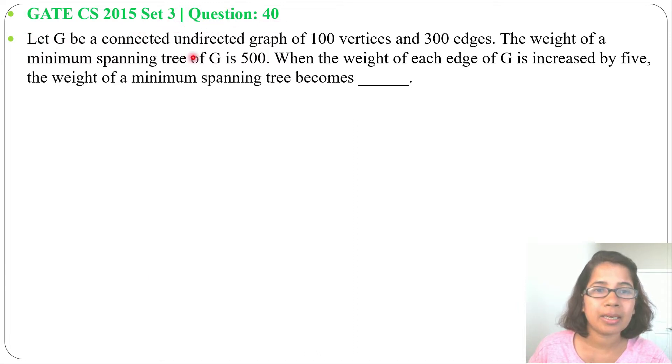Let G be a connected undirected graph of 100 vertices and 300 edges. The weight of a minimum spanning tree of G is 500. When the weight of each edge of G is increased by 5, the weight of the minimum spanning tree becomes blank. So in this question, it's given there are 100 vertices and 300 edges.